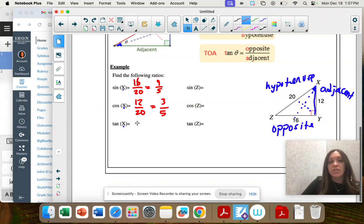Tangent, opposite over adjacent. 16 over 12 would reduce to 4 thirds.